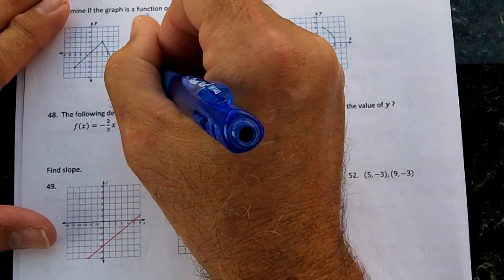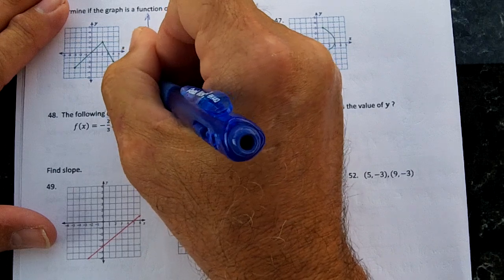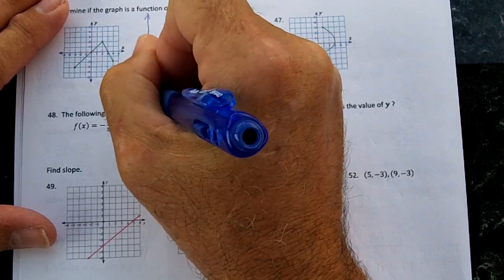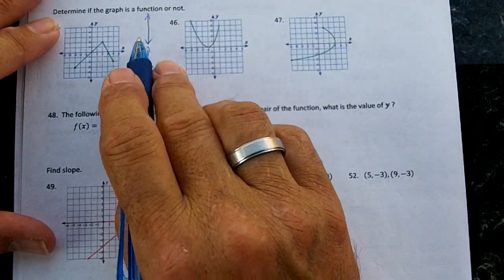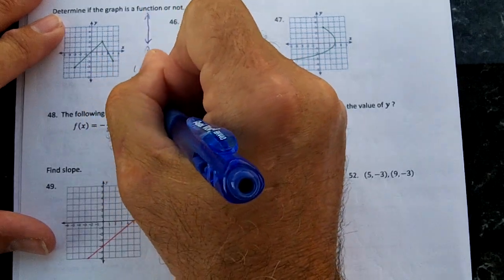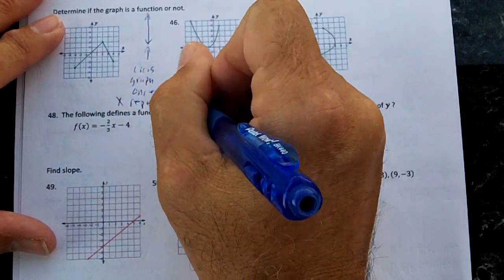We're going to use a vertical line test. A vertical line could cross the graph once. If it crosses a graph more than once, the X repeats. X repeats if it crosses more than once.